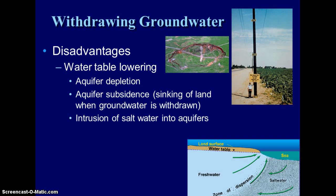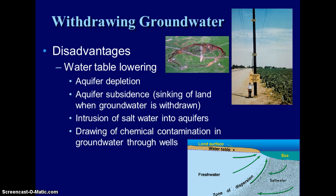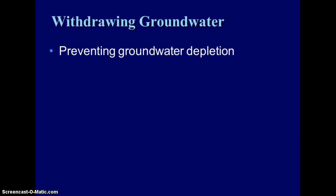Another thing that we see is the intrusion of salt water. If the water table is lower near the coast, then salt water can enter the aquifer. Chemical contamination is another issue — once groundwater is contaminated, there's not much we can do to remedy that situation. Reduced stream flow is also a concern. When groundwater reaches the surface, it creates springs which feed some of our streams. If we're lowering that water table, then we're going to see less water in our streams as well.